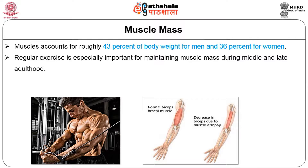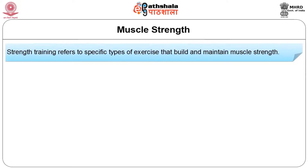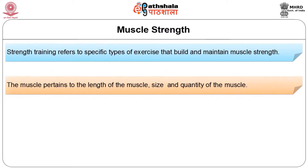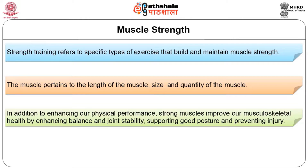Muscle mass tends to increase during puberty, and during adulthood we reach a peak muscle mass which tends to be maintained only if we are doing regular physical activity. The role of physical activity or exercise in maintaining muscle mass is of utmost importance. It has to be a blend of aerobic and resistance exercise. As we exercise, we get muscle strength, which pertains to the length, size, and quantity of the muscle.